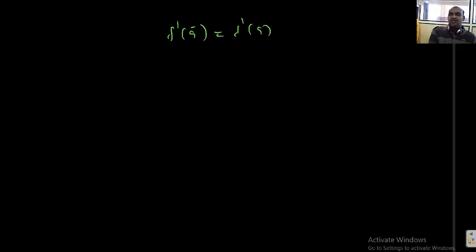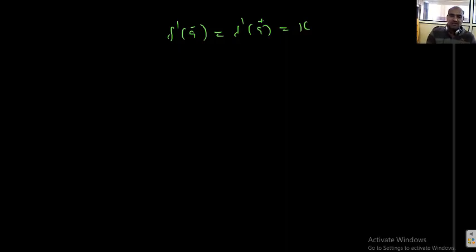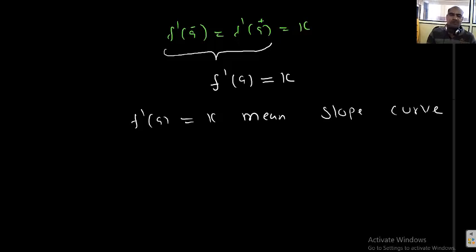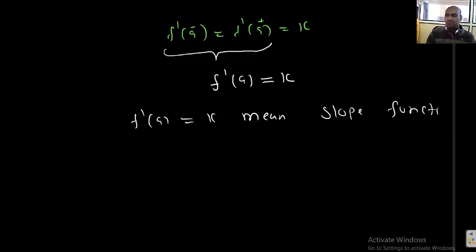Symbolically, f dash of a minus equal to f dash of a plus equal to k. LHD equal to RHD equal to k. This can be written simply as f dash of a equal to k, which means the slope of the curve or slope of function f at x equal to a.